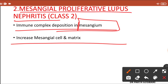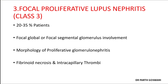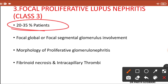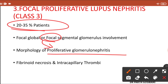Class 3 is focal proliferative lupus nephritis, seen in 20 to 35 percent of SLE patients. The term 'focal' means only part of the glomerulus is involved, and the morphology is that of proliferative glomerular nephritis — proliferation of all cell types including mesangial, endothelial, and epithelial cells. Additionally, fibrinoid necrosis and intracapillary thrombus can be seen.